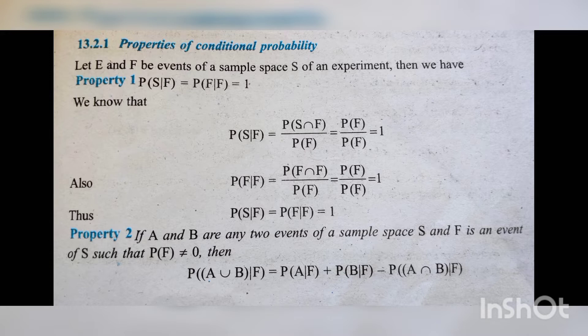Also, P of F given F is equal to P of F intersection F divided by P of F. Since F intersection F equals F, both P of F values get cancelled, and it becomes 1. Thus, P of S given F is equal to P of F given F is equal to 1.